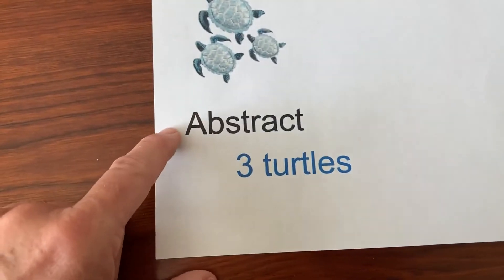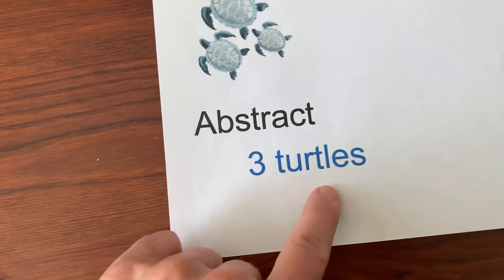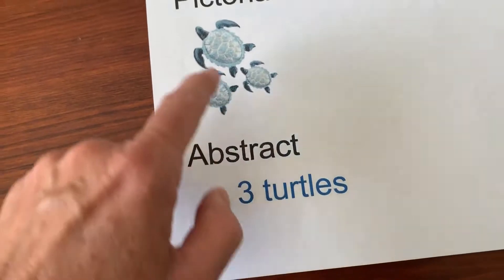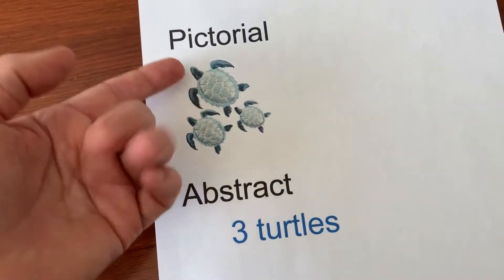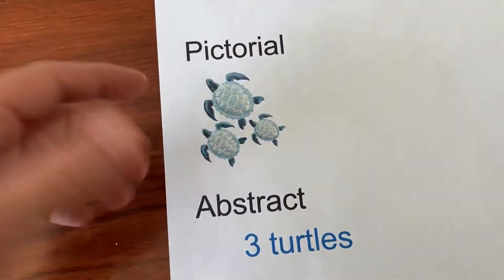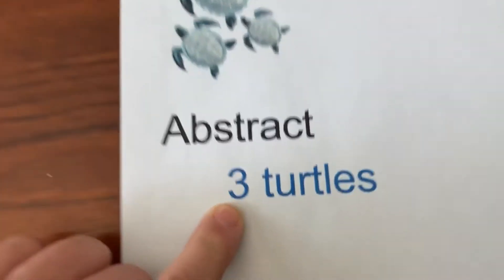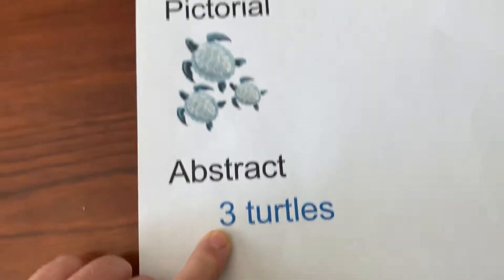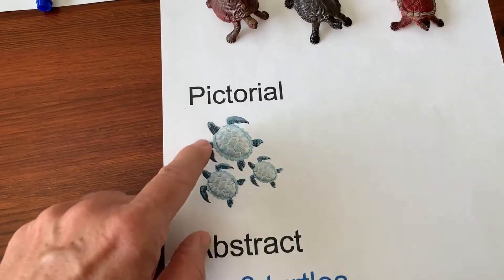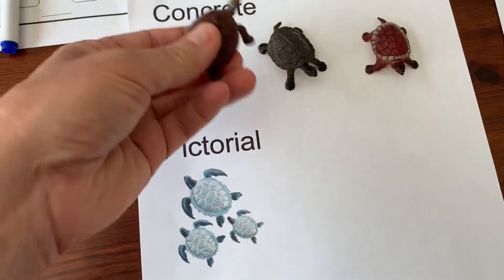Eventually you get to abstract where your problem would just say 'three turtles,' and by then the student can picture in their mind what three turtles looks like. But we can't assume that when they see the words 'three turtles' that students are able to picture three turtles and imagine having three turtles.